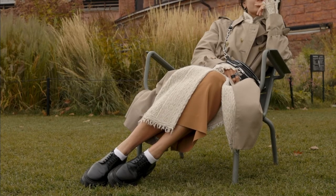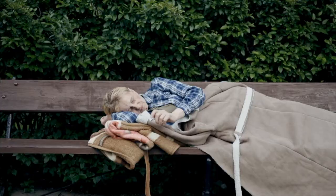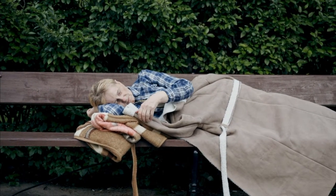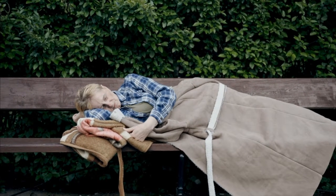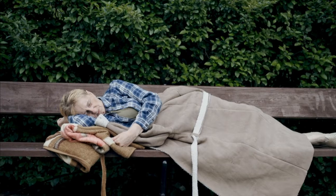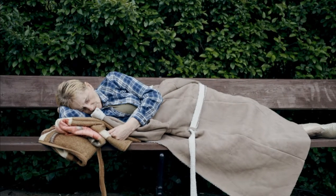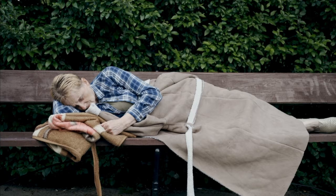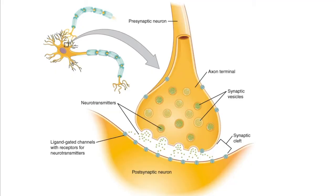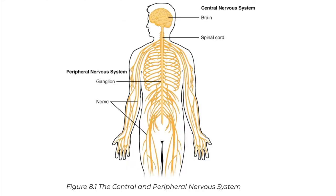Partial seizures have focal onset on one side of the brain. They are further classified into simple, complex, or secondary generalized seizures. Simple partial seizures are most common and may affect sensory or autonomic systems. Complex partial seizures include impairment of consciousness with or without motor activity. Simple or complex partial seizures may become secondarily generalized, producing a tonic-clonic seizure.